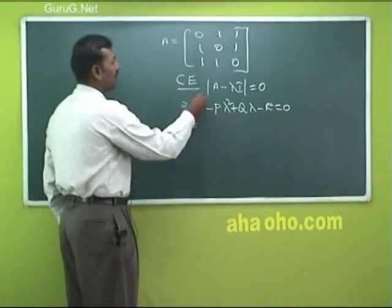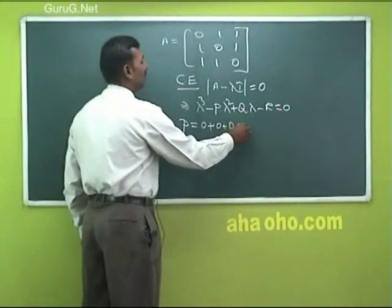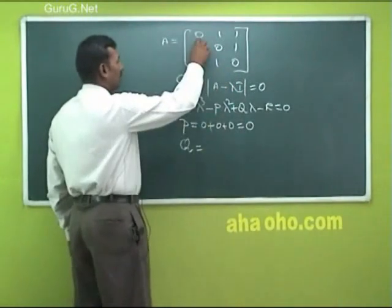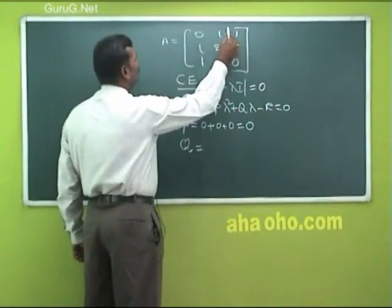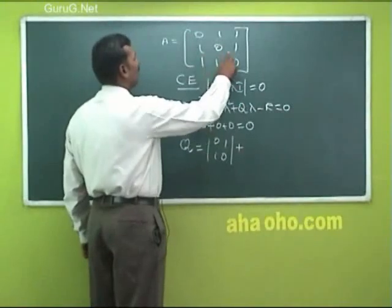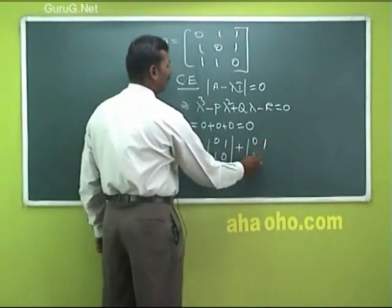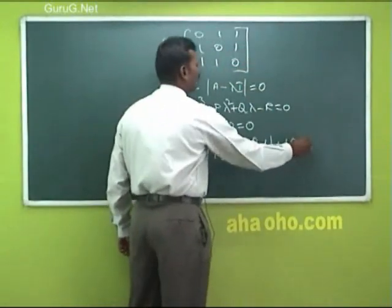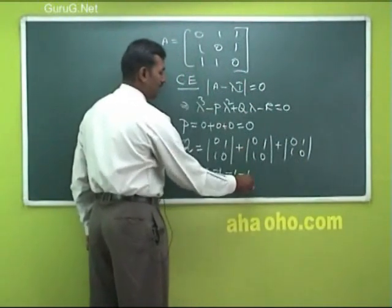So P — what is P? It is the sum of the leading diagonal elements. So 0 plus 0 plus 0 equals 0. Then Q equals the sum of minors of the leading diagonal elements. Omitting the first row and first column: [[0,1],[1,0]], plus omitting the second row and second column: [[0,1],[1,0]], plus omitting the third row and third column: [[0,1],[1,0]]. Simplifying: minus 1, minus 1, minus 1. So Q equals minus 3.